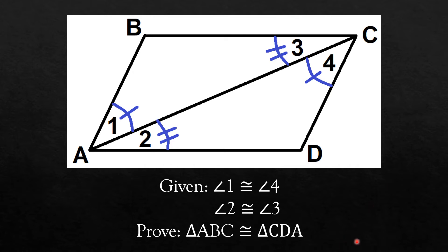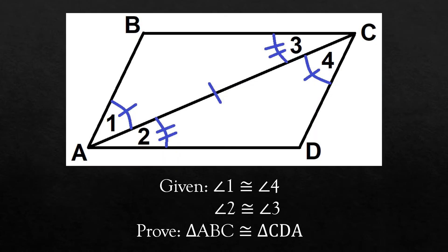First, we look at what we are going to prove. We need to prove that triangles ABC and CDA are congruent. How are we going to prove that two triangles are congruent? We need three corresponding parts of the two triangles to be congruent. By looking at the figure, you were already given two corresponding parts. We need one more — the common side. We can see that the common side of the two triangles are congruent by reflexive property.